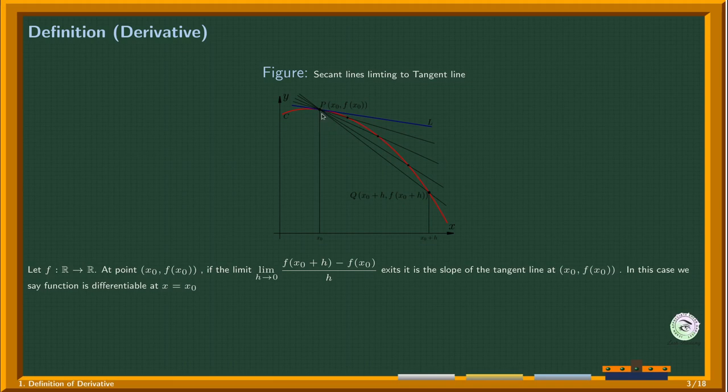So the slope of the tangent line at P, we call it the derivative at that point, and it is the limit of the slopes of secant lines. If this limit is defined, we say that this function is differentiable at that point. Here the point is x₀, so we will say the function is differentiable at x₀.